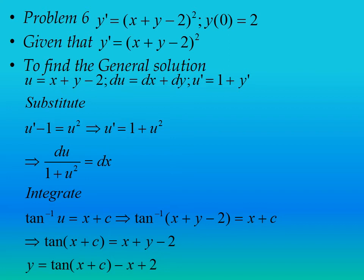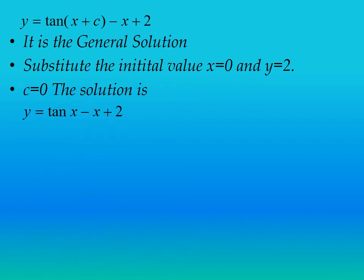Separating the variables: du/(1 + u²) = dx. Integrating — a standard integral — gives tan⁻¹(u) = x + c. Substituting back u = x + y - 2: tan⁻¹(x + y - 2) = x + c. Simplifying: y = tan(x + c) - x + 2. This is the general solution. Substituting the initial value x = 0, y = 2 gives c = 0. So the particular solution is y = tan(x) - x + 2.